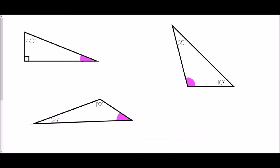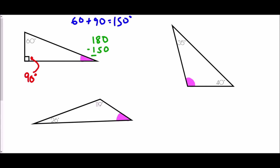Let's use that rule to find the missing pink angles in each triangle. The first is a right-angle triangle — the little square in the corner tells me it has a right angle of 90 degrees. The angles must add up to 180, so I add the two known angles: 60 plus 90 is 150 degrees. The missing angle is 180 take away 150, which gives 30 degrees.